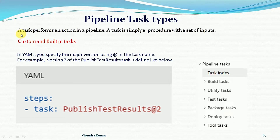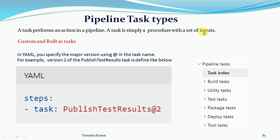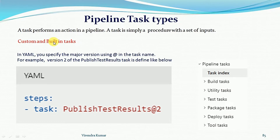The definition of a task is: a task performs an action in the pipeline. When we want to perform a particular action, we define a task for it. A task is simply a procedure with a set of inputs. Tasks are of two types: the first is the custom type and the second is the built-in task. A custom type task is defined by the user, while a built-in task is already available and predefined in the CI/CD system, accessible through the CI/CD pipeline.